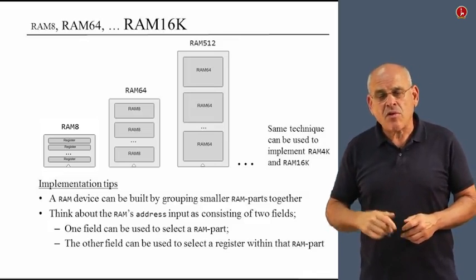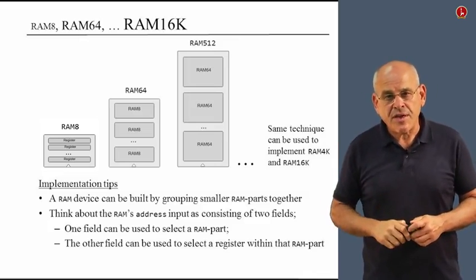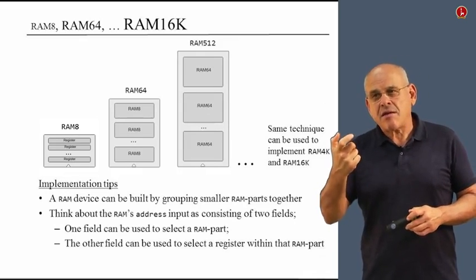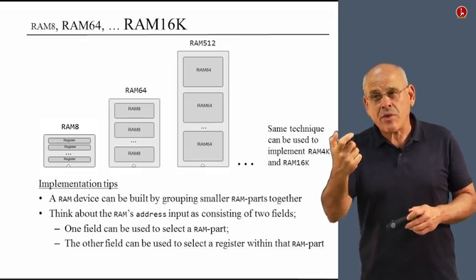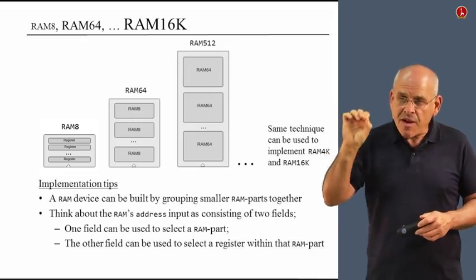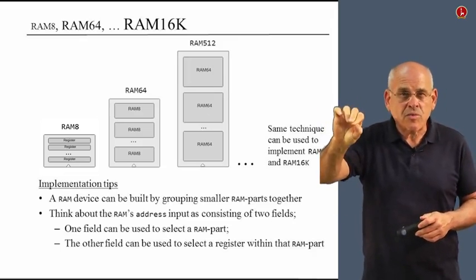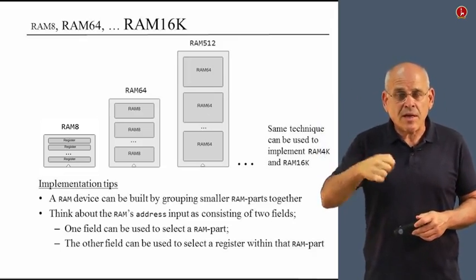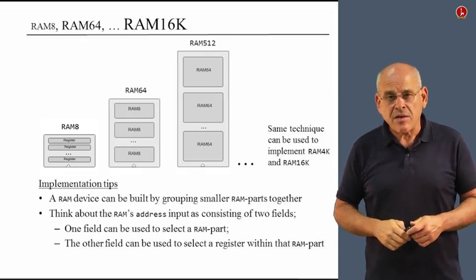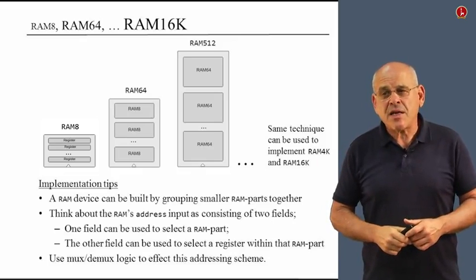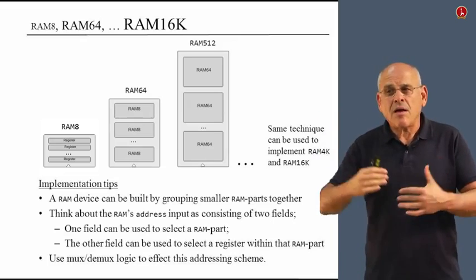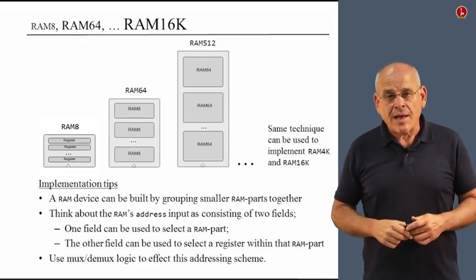One field can be used to select the exact RAM part on which you want to operate. And the second field can select the very register within this RAM part that you want to affect by either reading or writing something into this register. So, taken together, these two tricks can enable you to build RAM devices of arbitrary length.